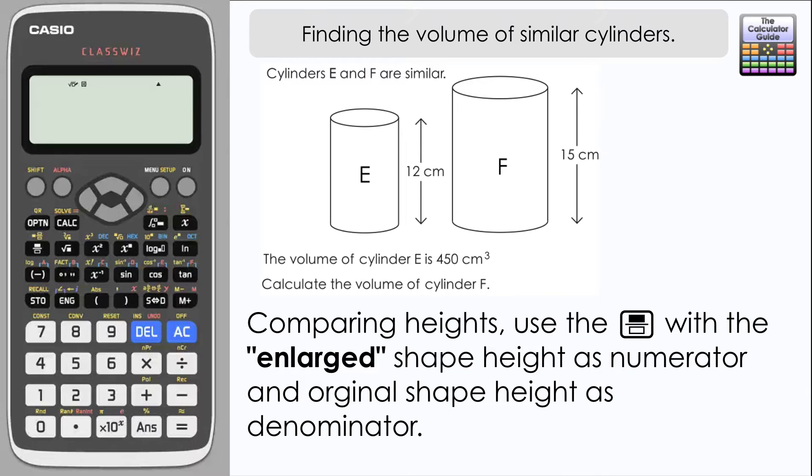Use the fraction button and you want to put the height of the enlarged shape as your numerator. Now I've put 'enlarged' in inverted commas here because it may be that the enlarged shape is smaller. If you have a scale factor that is between zero and one, say for example a half, then you're going to have a cylinder which is half the height, but we'd still describe that as being an enlargement, so we have to be careful here. The denominator should be the height of the original shape or the height that you've essentially been given the volume of in the question, so in this case cylinder E.